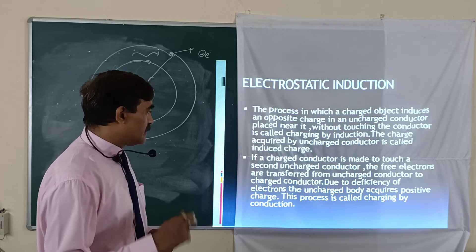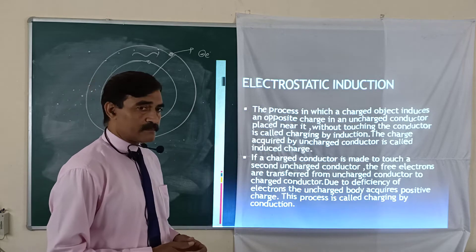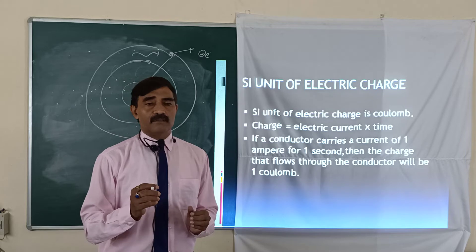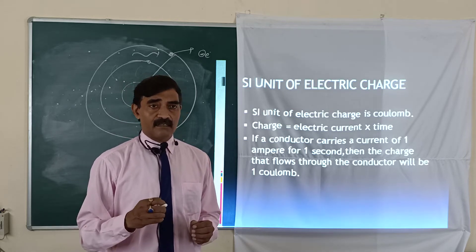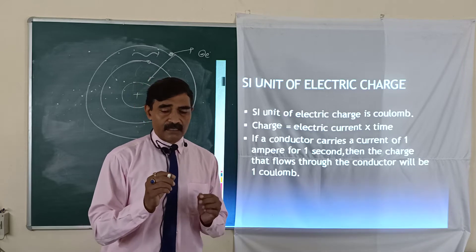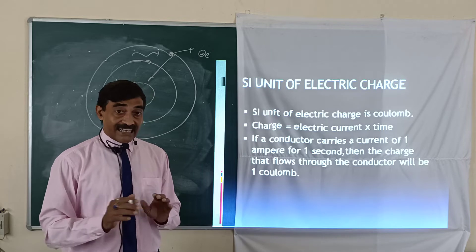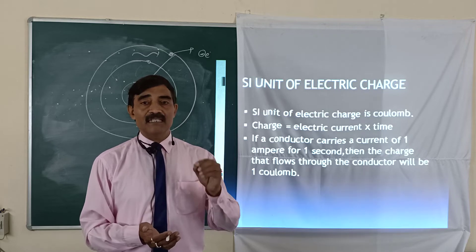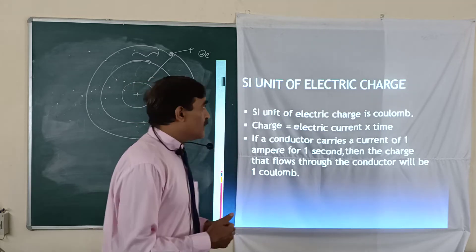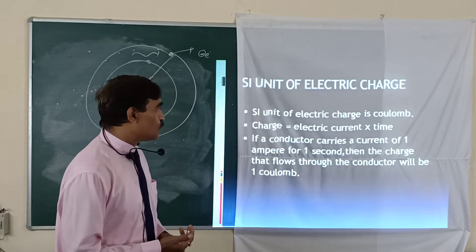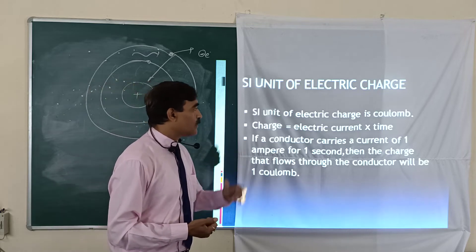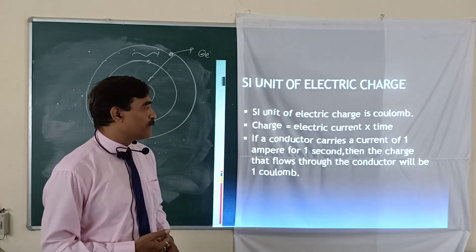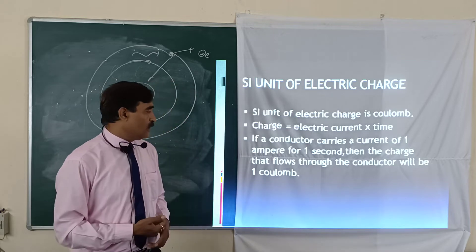For conductors, charge given to the body spreads throughout the surface. If the body is an insulator, the charge given remains at that place and does not spread. The unit of electric charge is the coulomb, given by q = i × t. One coulomb is defined as the charge that flows through a conductor carrying a current of one ampere for one second.